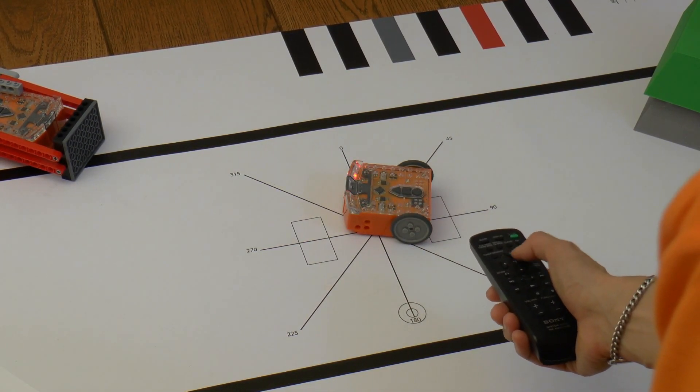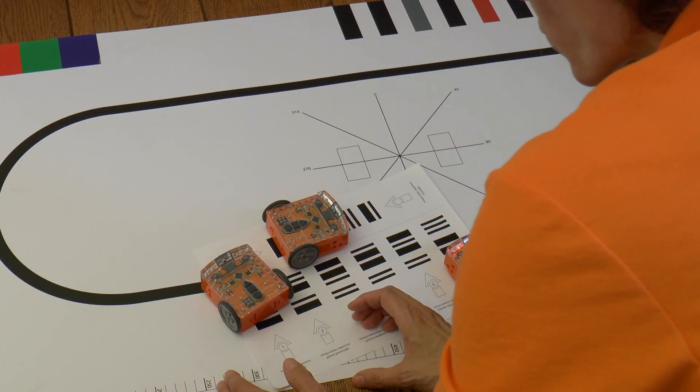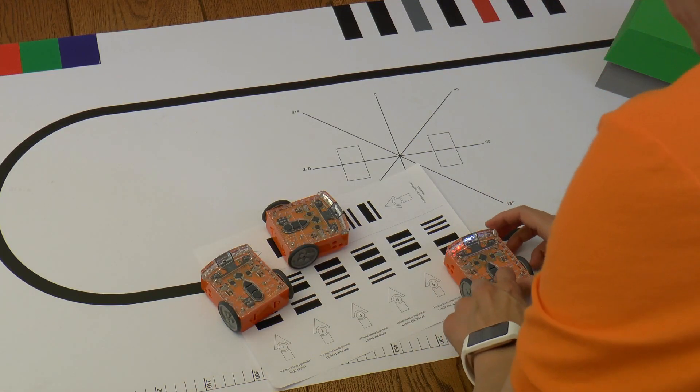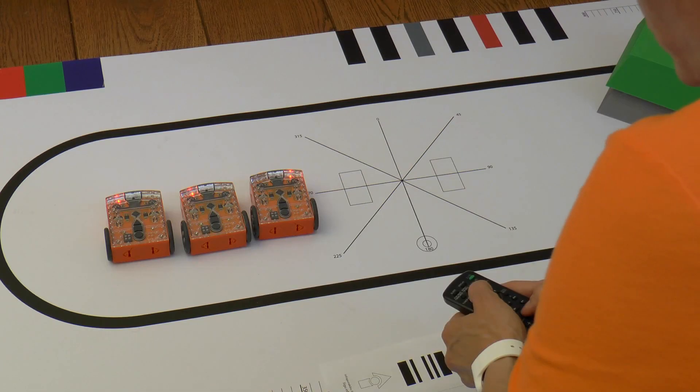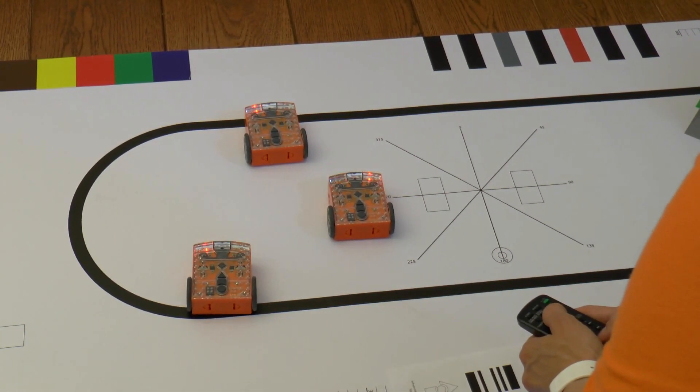I'll demonstrate. With one Edison I'll drive over the code drive forward. With the other I'll drive over the code drive backward and with the third one over the code make a beep.